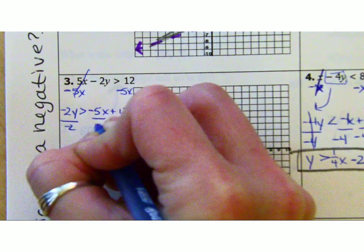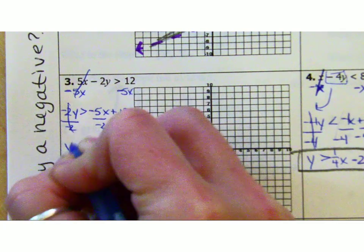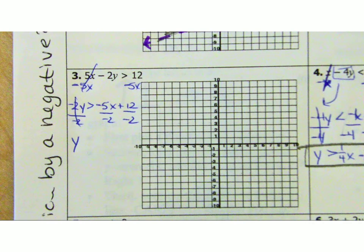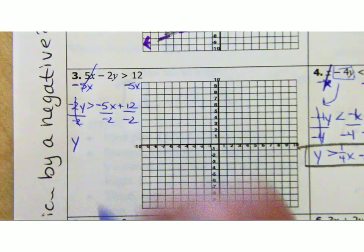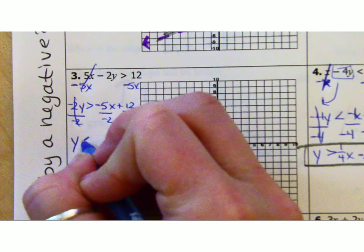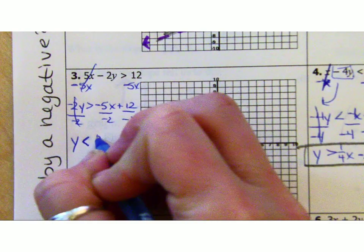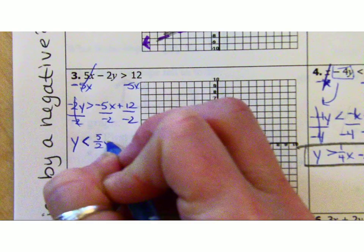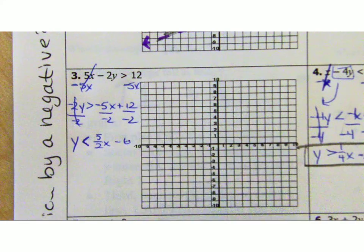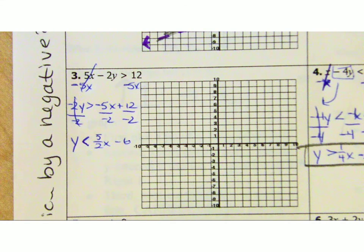About to divide by negative. Okay, you with me? About to divide by negative. Okay, did you get to that point? Did you get a y-intercept of negative 6? Did you get a slope of positive 5 halves? And did you flip the sign? Only then are you ready to plot your points correctly.